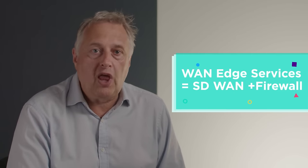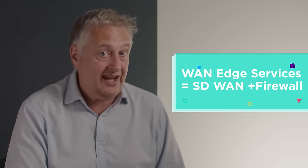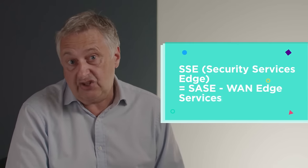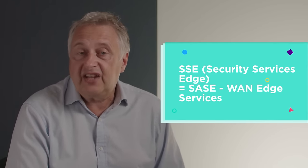Gartner, for example, have responded with new quadrants that treat SD-WAN and network firewall as one element in WAN edge services and then a separate security services edge or SSE quadrant that takes care of the other cloud security services that were in the SASE model.